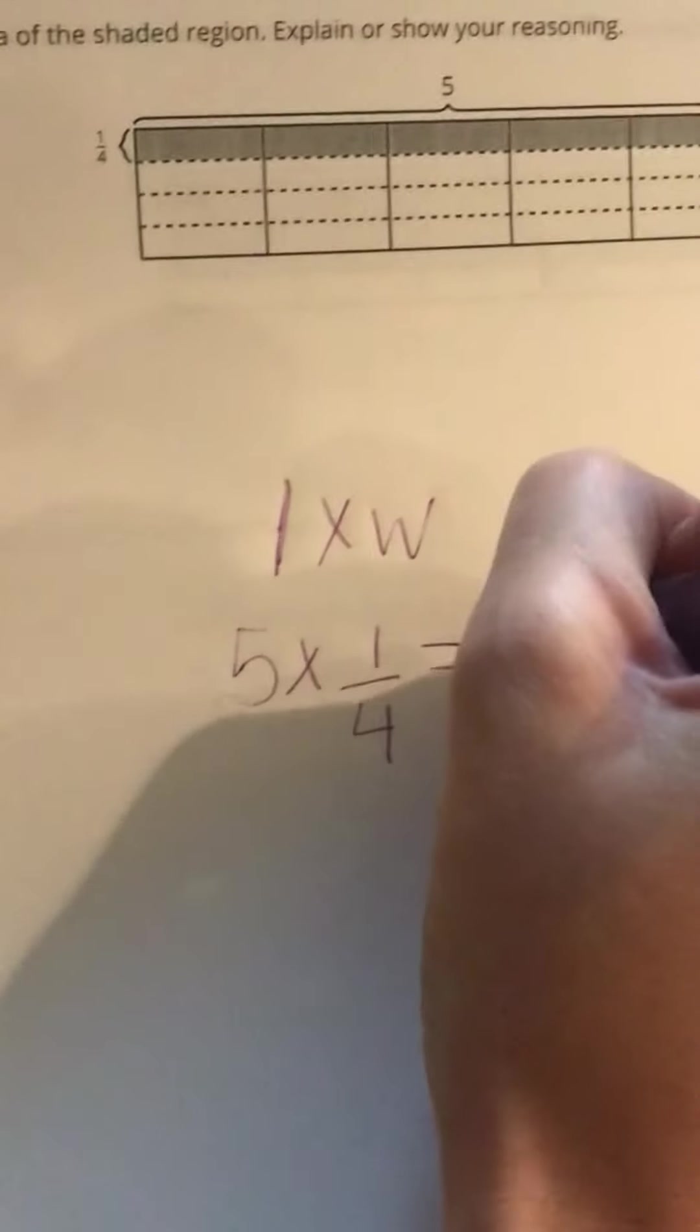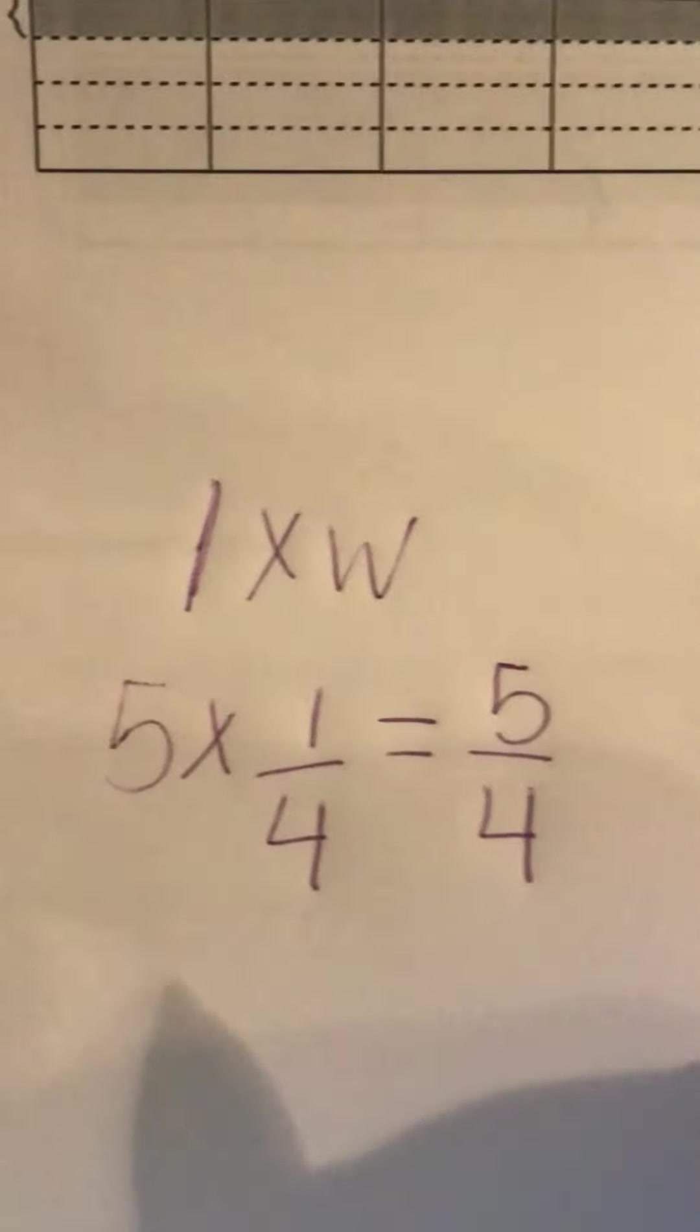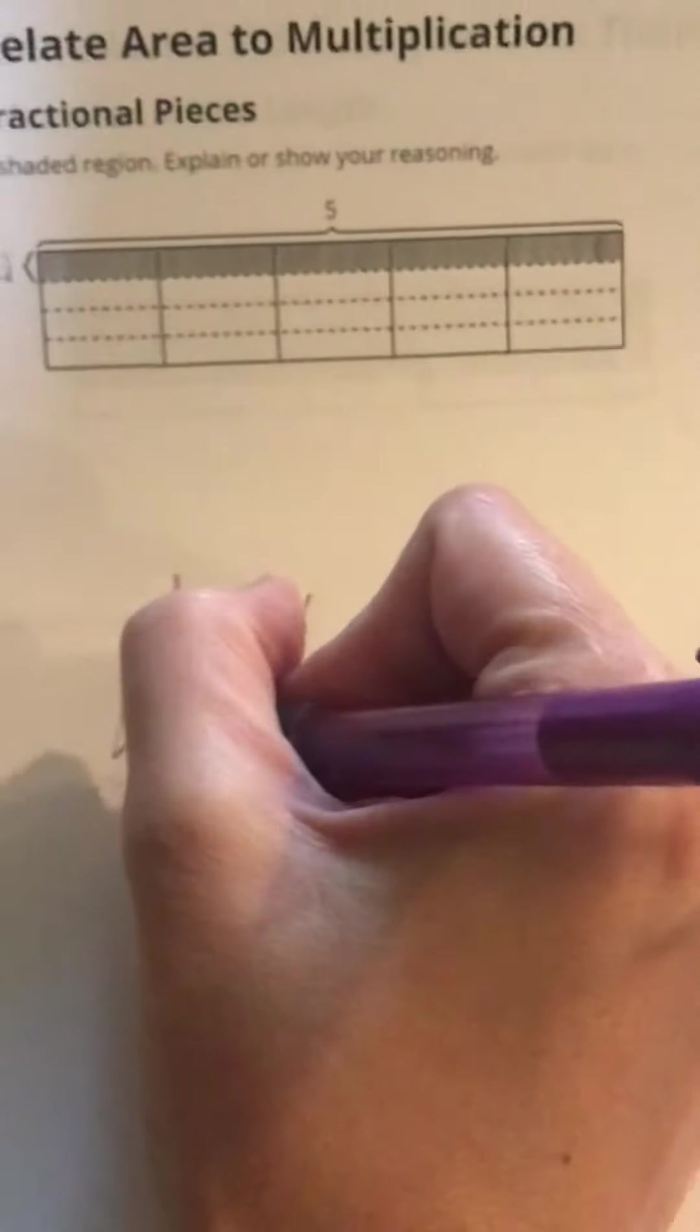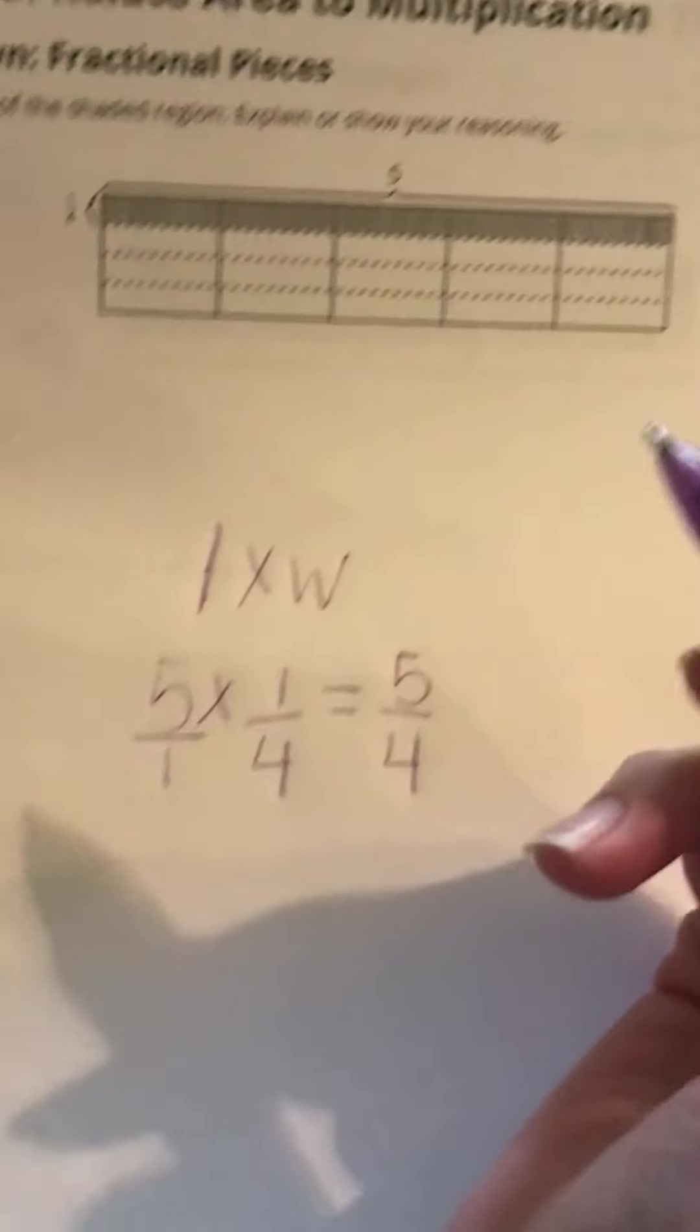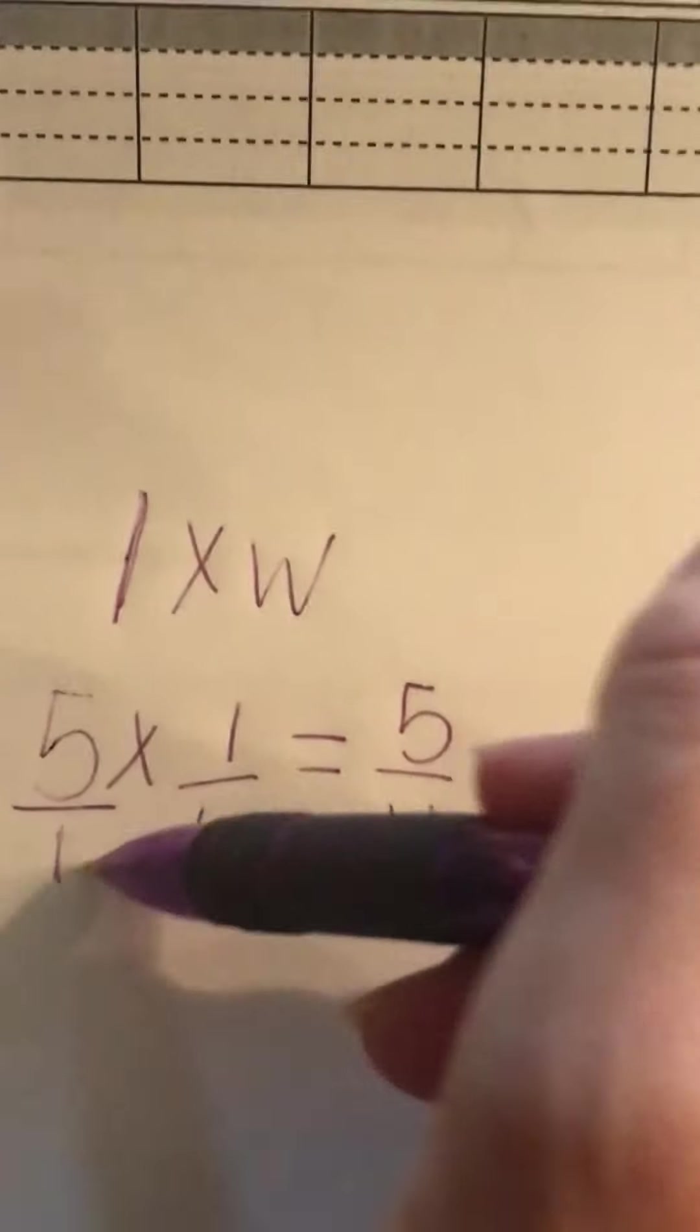That gives us 5/4 because we don't multiply the denominator. You can change any whole number into a fraction by putting a 1 underneath it, and we multiply the numerators and multiply the denominators.